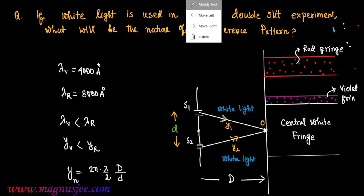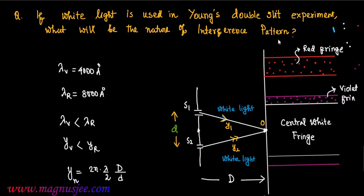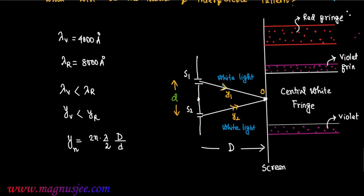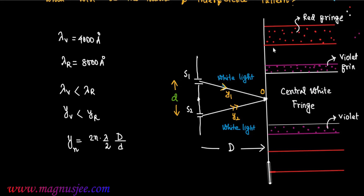If white light is used in Young's double slit experiment, then colored fringes will be formed on both sides of the central white fringe. The nearest fringe will be the violet fringe, and the furthest fringe will be the red fringe. Violet fringe will have the smallest width and red fringe will be the widest. Red fringe will be formed at the largest distance from the central white fringe on the screen.